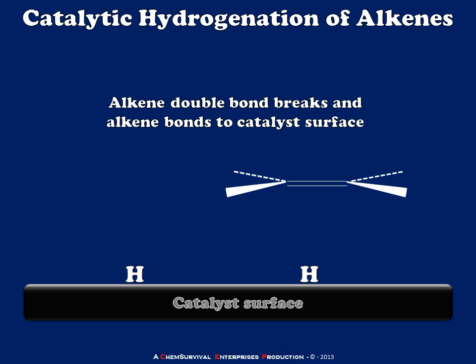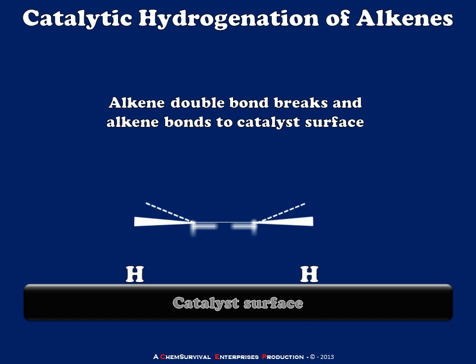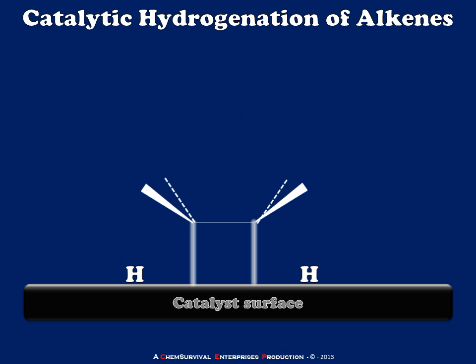The next step is that the alkene double bond also interacts with this catalyst on the surface — the alkene comes in like this and attaches itself. The final part of this process is that our alkene is going to pick up those hydrogens, and when those bonds form, they have to form on the same side of the alkene because the hydrogens are both held on the surface of the catalyst.